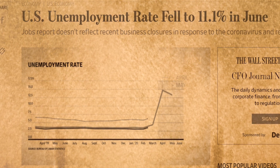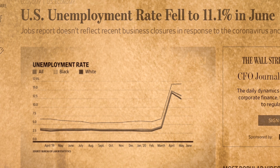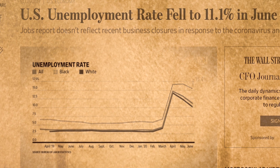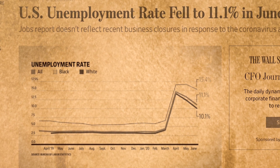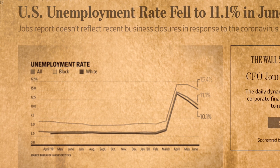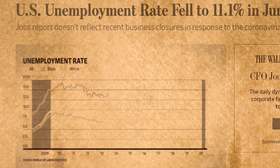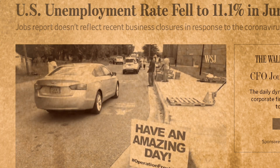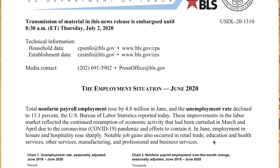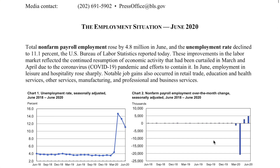But that dip wasn't universal. Black unemployment ticked upwards. It declined in June, but not at the same rate as unemployment overall. This follows a decade where the unemployment gap between white and Black workers has been narrowing.